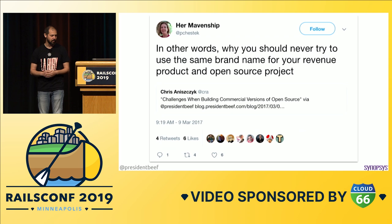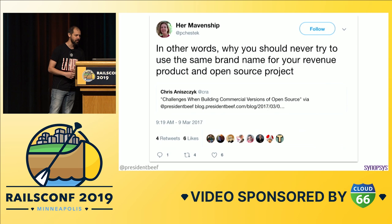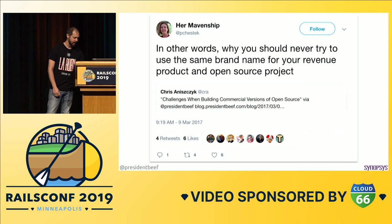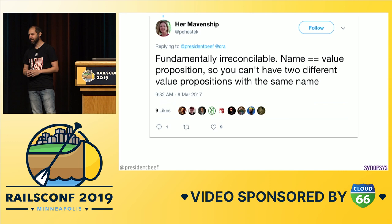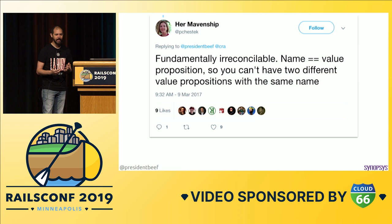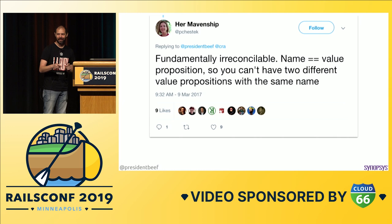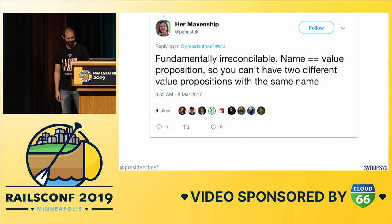I got called out on it. I had posted a blog about something similar to this talk — some difficulties around commercializing open source. A woman came along and said, 'Yeah, so in other words, this is why you should never try to use the same brand name for your revenue product and your open source project.' She followed up with: 'Fundamentally irreconcilable. Name equals value proposition. So you can't have two different value propositions with the same name.' And this is her pinned tweet on her profile, so every now and then someone will come by and like it, reminding me I got called out — even though we've already sold the company.